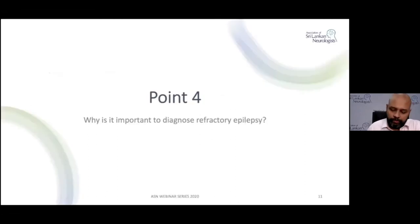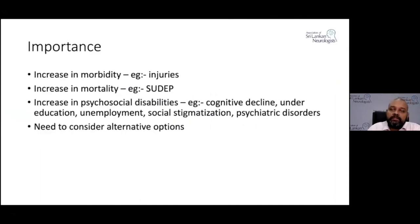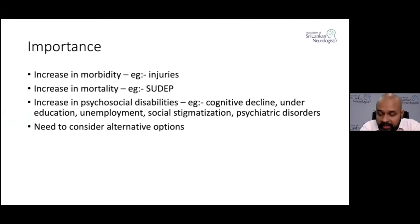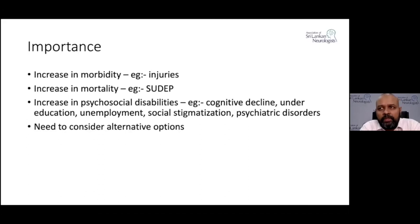The fourth point: why is it important to diagnose refractory epilepsy? There is an increased risk of injuries and morbidity associated with resistant epilepsy, and an increased risk of mortality. The mortality is often identified as SUDEP — Sudden Unexpected Death in Epilepsy. In any population, there is approximately a one in 700 chance of death due to epilepsy, postulated to be due to severe autonomic dysfunction.